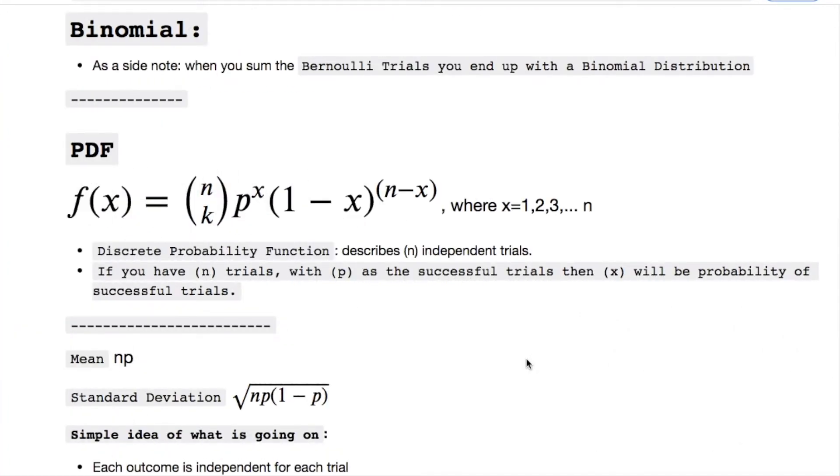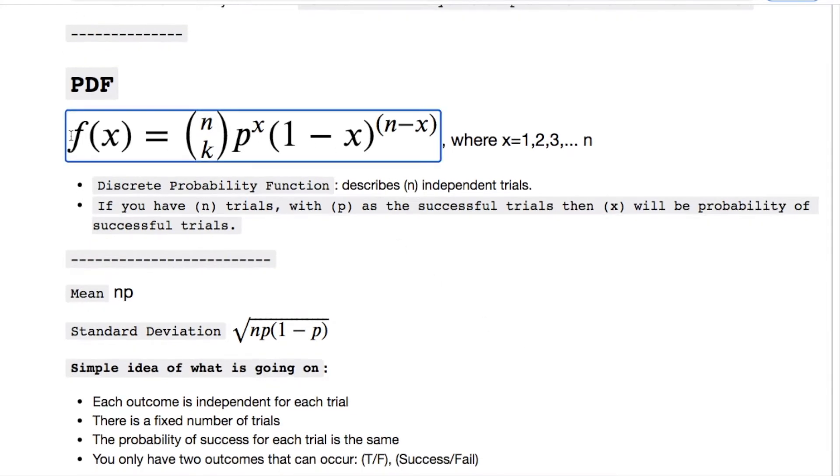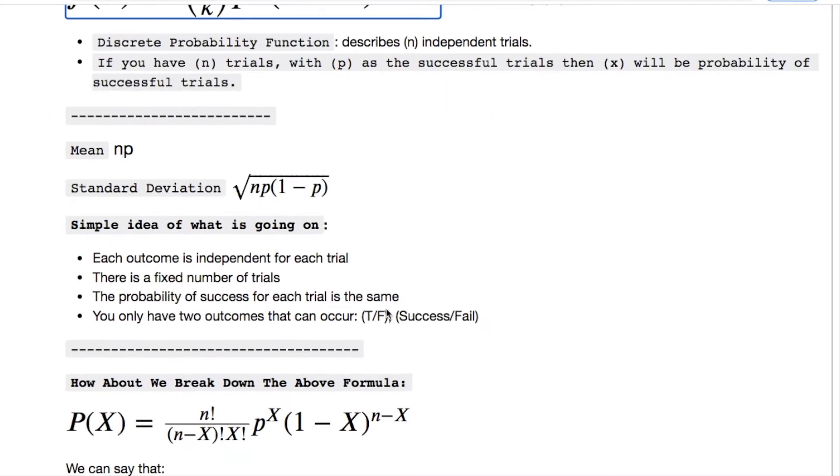The binomial distribution can be thought of as the sum of Bernoulli trials, which end up giving you the binomial distribution. If you're doing like a heads and tails success-fail situation with a large number of trials, that's where you end up with this distribution. The PDF can be explained by this formula right here. We'll simplify explaining this below. You have your mean and your standard deviation here.